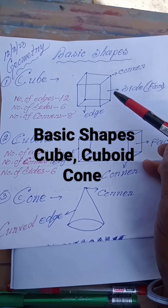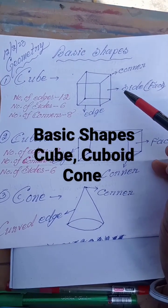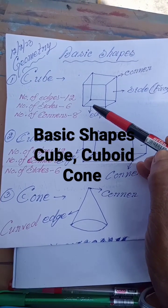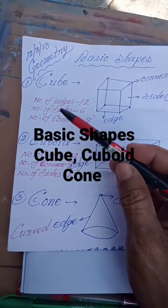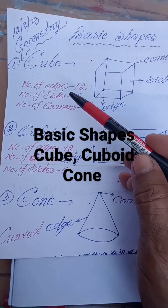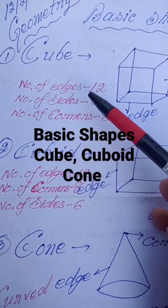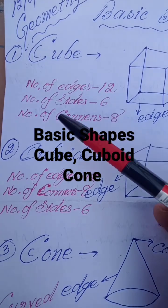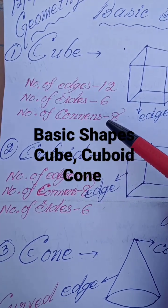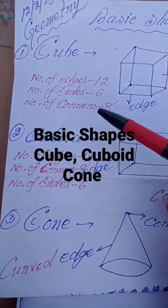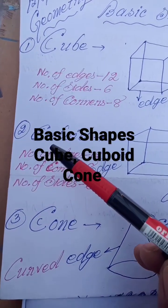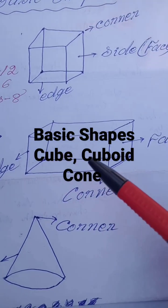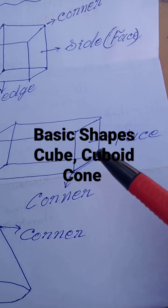This is a corner, this is a side or face, and this is an edge. Number of edges: 12. Number of sides: 6. Number of corners: 8. Same type is cuboid. This is also your same type of shape.